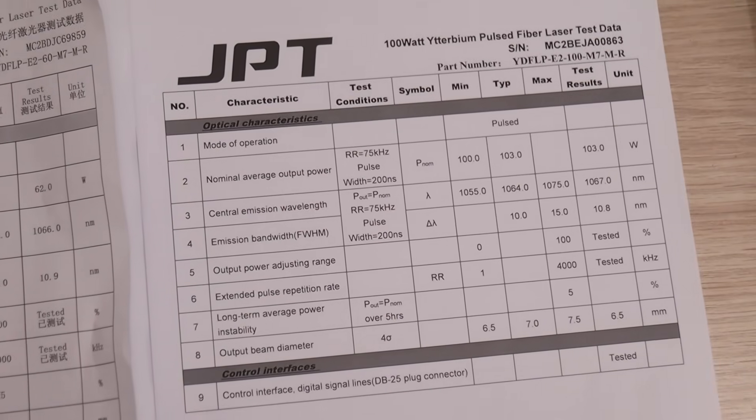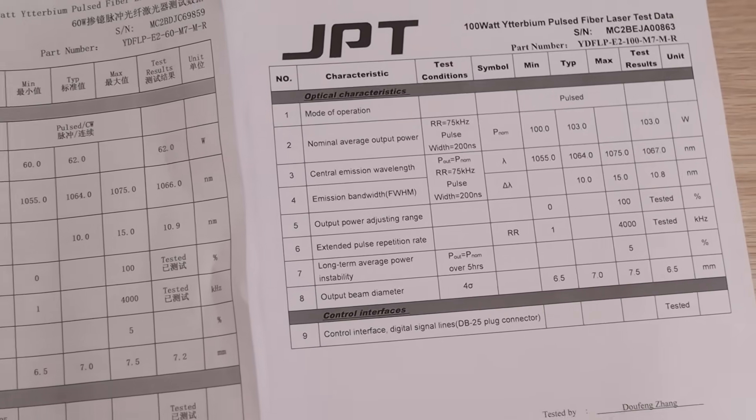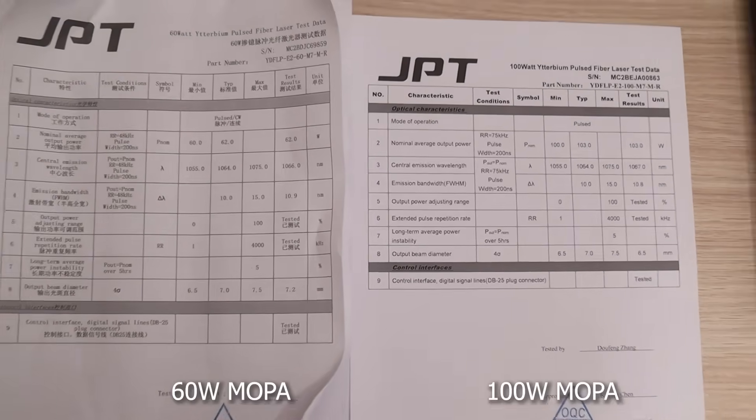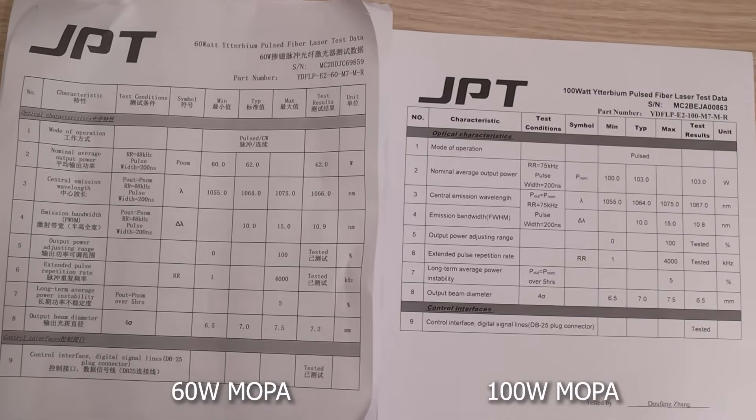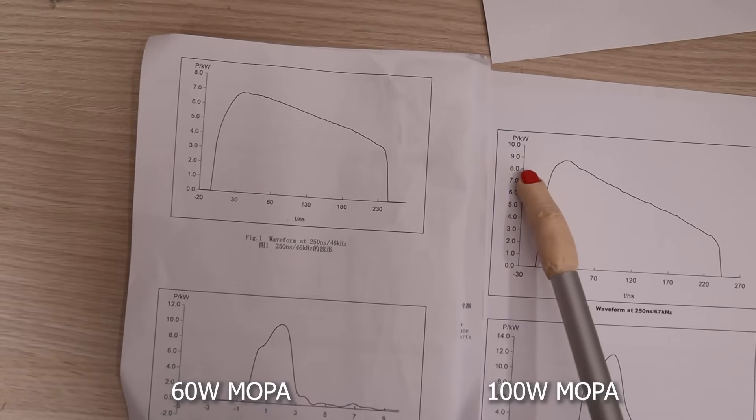My CommMarker Titan 1 features a 100-watt JPT Mopa fiber laser source, though a 200-watt version is also available for those needing even more cutting power. Compared to the 60-watt JPT sources in my previous machines, the Titan maintains similar specifications but with significantly higher power output.